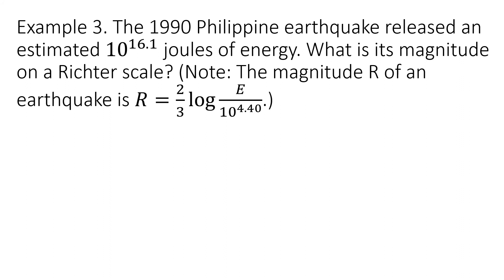Example 3: the 1990 Philippine earthquake released an estimated 10 to the 16.1 joules of energy. What is its magnitude on a Richter scale? Note that the magnitude R of an earthquake is defined by R equals 2 thirds times the logarithm of E over 10 to the 4.4. To solve for R, we substitute the given value for E, which is 10 to the 16.1.